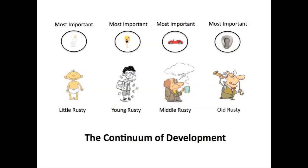Piaget asserted throughout his entire work that cognitive and intellectual change are the result of a developmental process. Here in this diagram, you see a continuum of development. Piaget thought that this developmental process was a coherent process and that it was formulated upon the changes associated with your cognitive structures or your schemata.